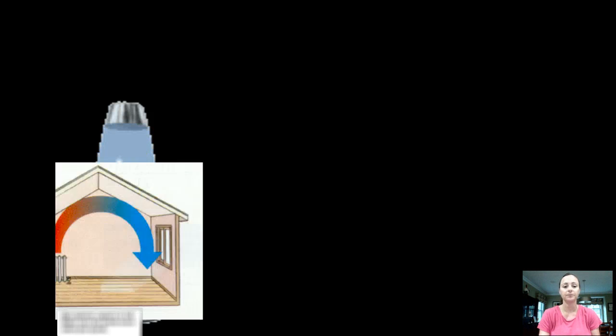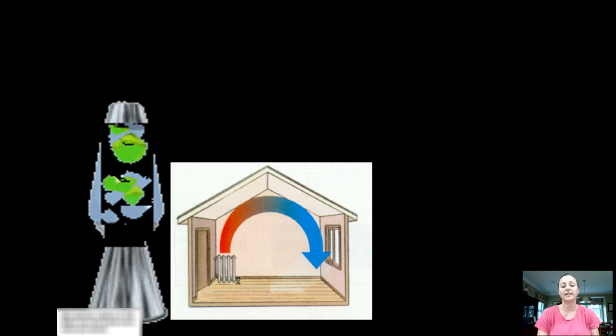So the changing densities due to the change of temperature within the liquid or within the air creates what we call a convection current or a convection cell, and it creates this circular motion. Here you see an example of a heater inside a house.